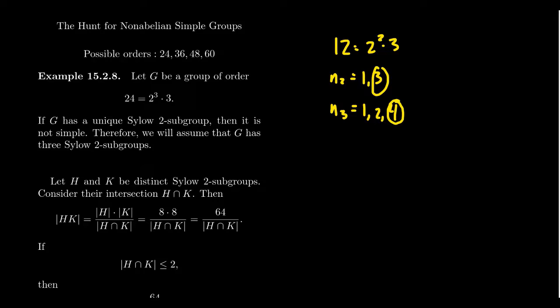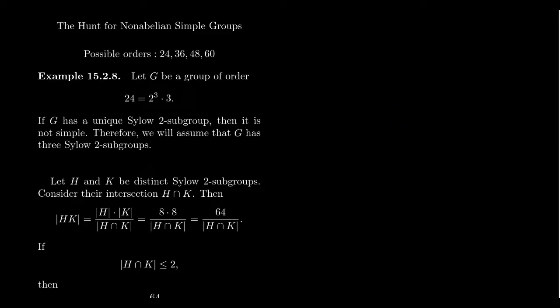You'll notice that 24, 36, and 48 all have the form where we have a power of 2, a power of 3, and in particular at least two 2s, and so thus getting a multiple of 12. These ones are a little bit harder because of those observations. But in this video, we're going to rule out 24, 36, and 48. Let's start with the smallest of them, 24.